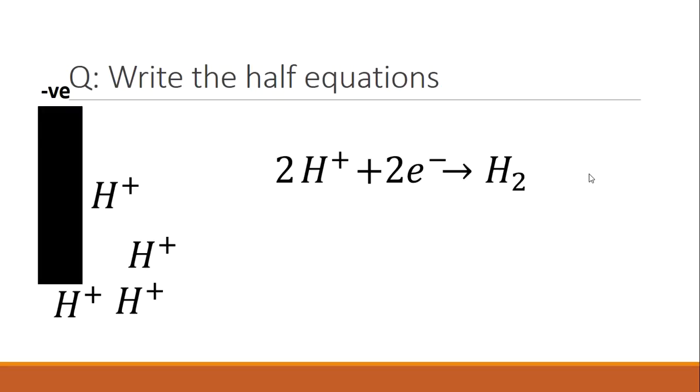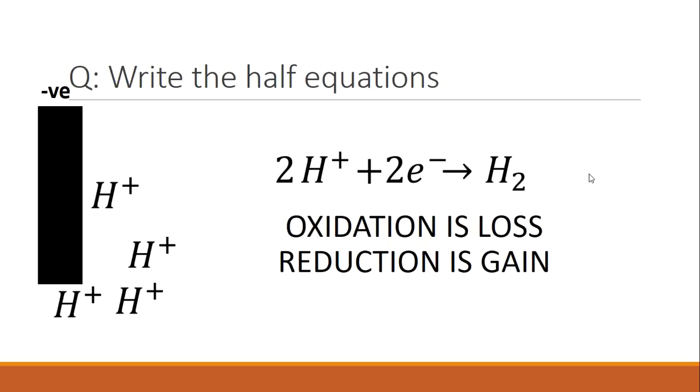So what is actually going on here? To understand this, we go back to OIL RIG. Oxidation is loss, and reduction is gain. Well, in this case, the H+ ion is gaining electrons. So we've got reduction. We would say that H+, or the hydrogen ion, is being reduced.